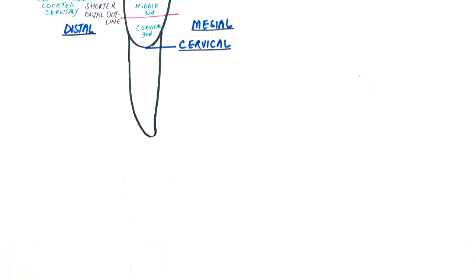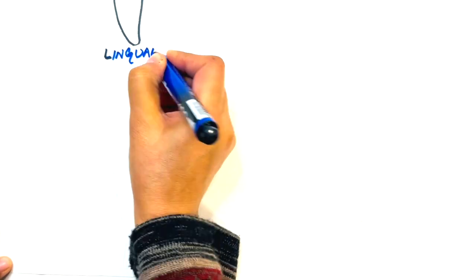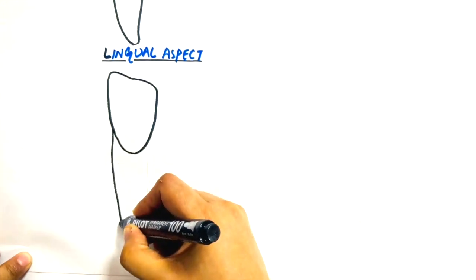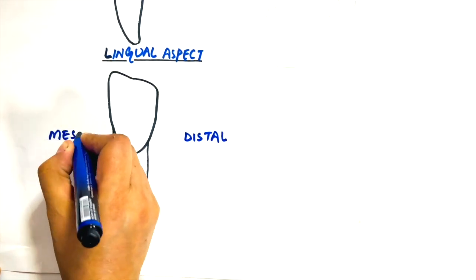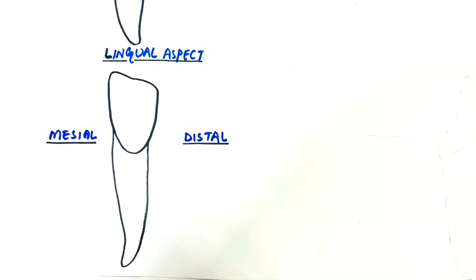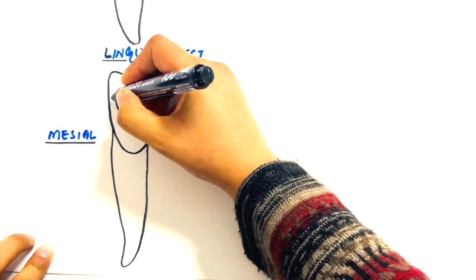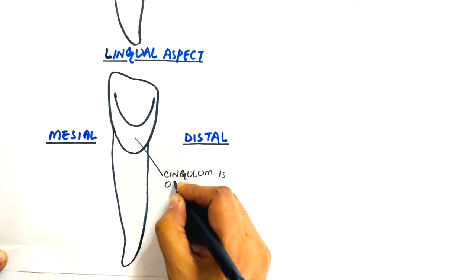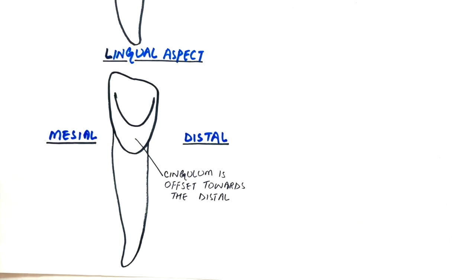From the lingual aspect, the outlines are same as the outlines of the labial aspect. The cingulum, unlike the cingulum of the central incisor, is more offset to the distal, which makes the curvature of the cervical outline offset towards the distal.